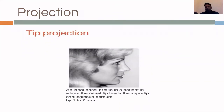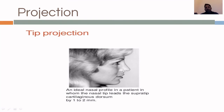Next is projection — how far the tip is from the face. In the supra-tip region, the tip should ideally be about one to two millimeters ahead of the supra-tip. This distance of the tip from the face is called tip projection and is a very important aesthetic point in rhinoplasty.